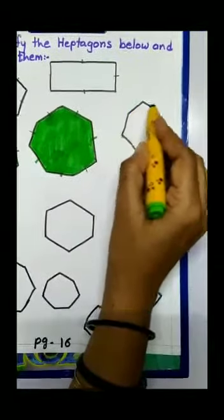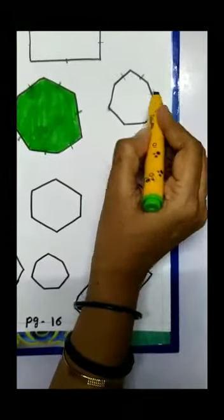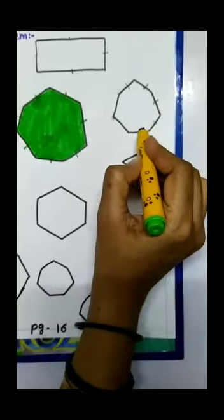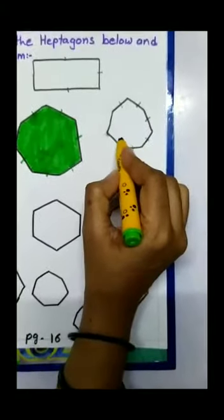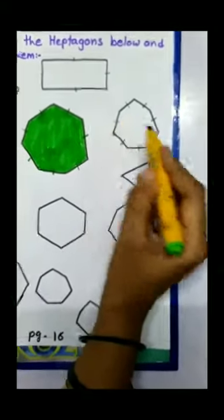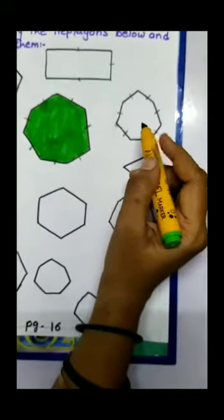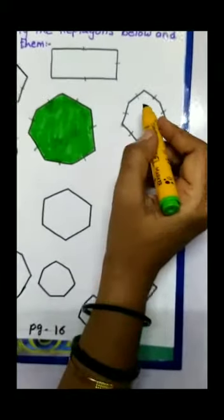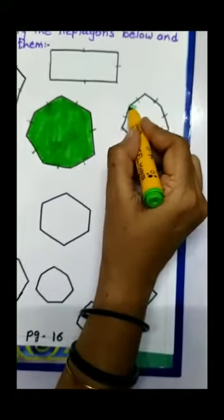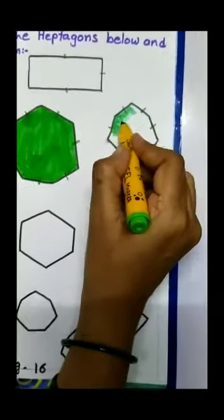1, 2, 3, 4, 5, 6, 7. This image is also having seven sides. Yes, it means we will color this one also.